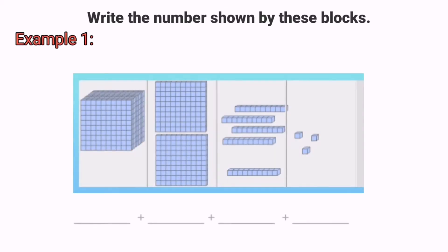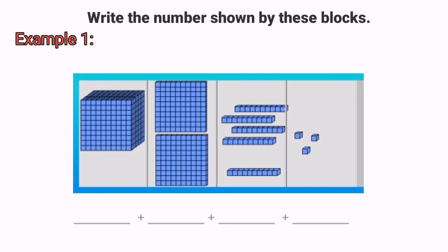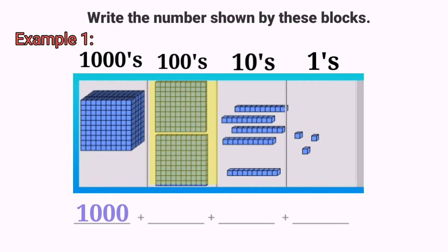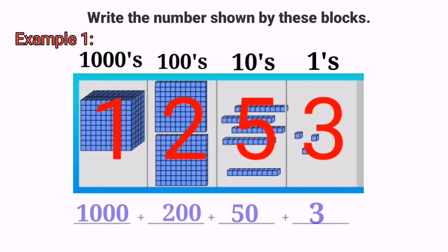Our next activity is we try to write the number shown by this block. Example number 1: we look for the place value. This one is thousands, hundreds, tens, and ones. One cube is 1,000, two flats is 200, five longs is 50, and three shorts is 3. So the total number is 1,253.